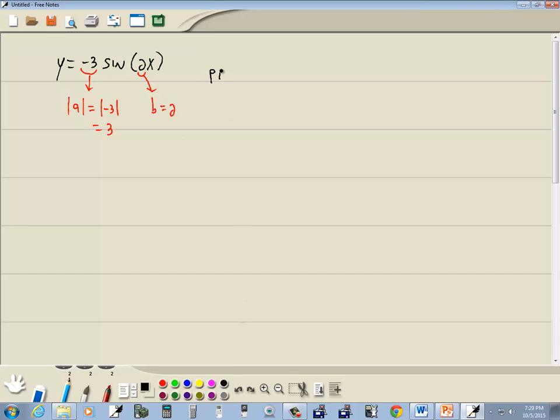Well first let's find our period. Your period is going to be equal to 2π over b. So we've got 2π over 2, or simply π.